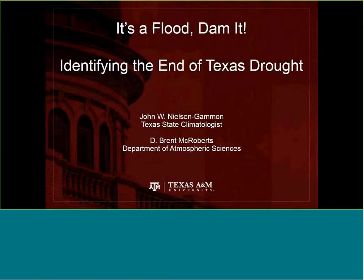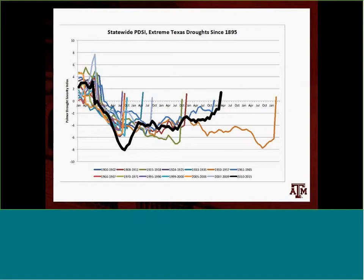Here are all the droughts since 1895 according to the Climate Division data, using the Palmer Drought Severity Index. The timeline spans about seven years. The real long one is the drought of the 1950s. The second black line is the 2010 to 2015 drought. The Palmer Drought Index finally went positive in March. But Texas is a big state and characterizing drought throughout the state with one number is not really a good idea, so that's basically what motivated our project.